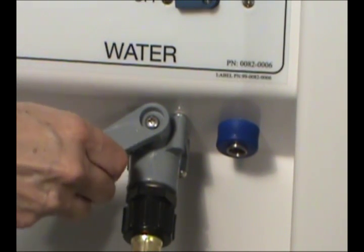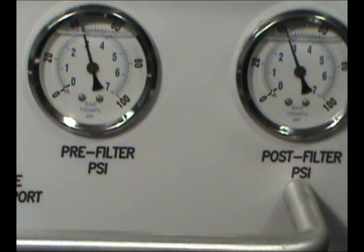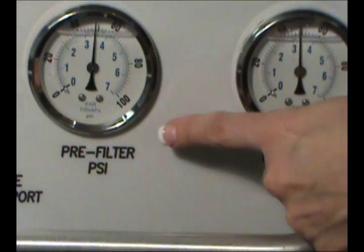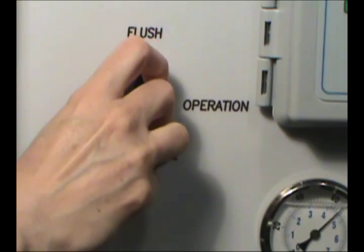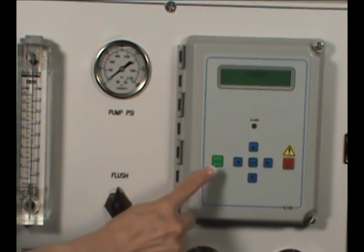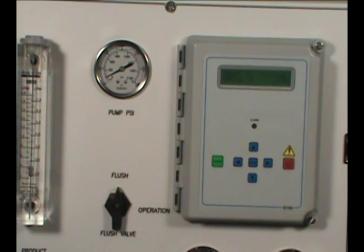To begin operation, turn on the tap water supply. Check the pressure gauge on the front of the RO to verify you have water pressure. Turn the flush valve on the RO to the flush position. Push the green power keypad on the RO control panel to start the unit.